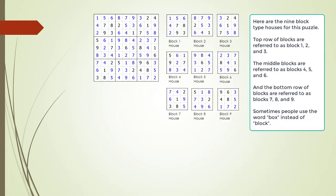Here are the 9 block type houses for this puzzle. We refer to the top row of blocks as blocks 1, 2, and 3; the middle row as blocks 4, 5, and 6; and the bottom row as blocks 7, 8, and 9. Sometimes the word 'box' is used instead of the word 'block.' In DX Sudoku videos we will use the word block throughout.